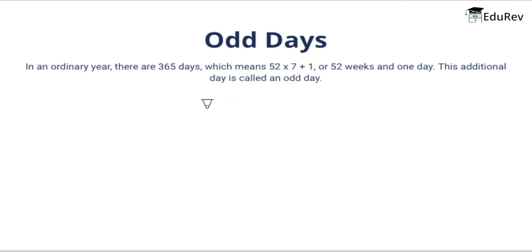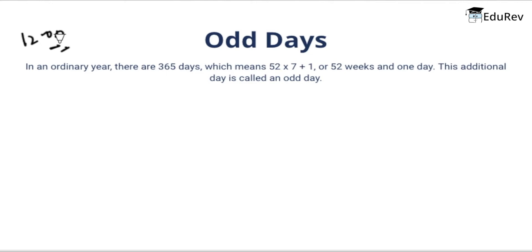Now suppose we have to calculate the number of odd days in 1200 years. In 1200 years, there are three years which are divisible by both 100 and 400 — that is 400, 800, and 1200. The remaining years are only divisible by 100, that is 100, 200, 300, 500, 600, 700, 900, 1000, and 1100.